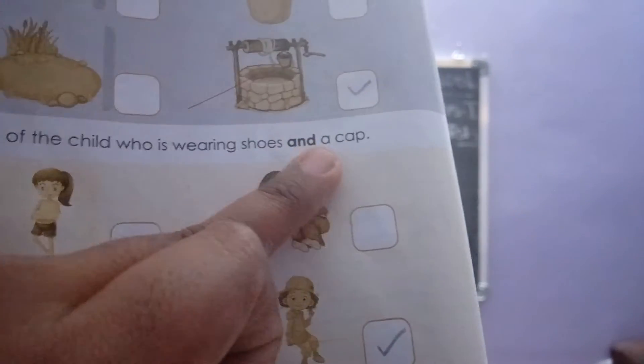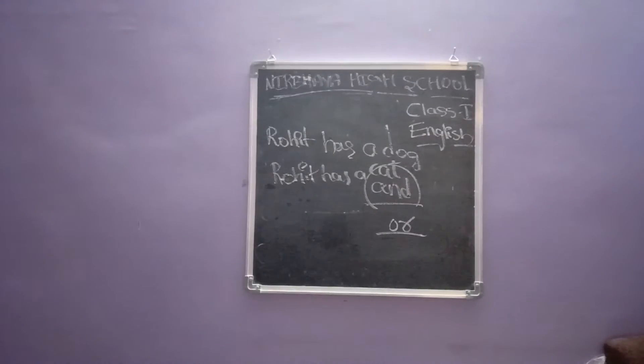Next: take the picture of the child who is wearing shoes and a cap. Here is a picture — who is wearing shoes? This girl is wearing shoes, and she also wears the cap. So we have to tick her. She is wearing shoes and a cap.